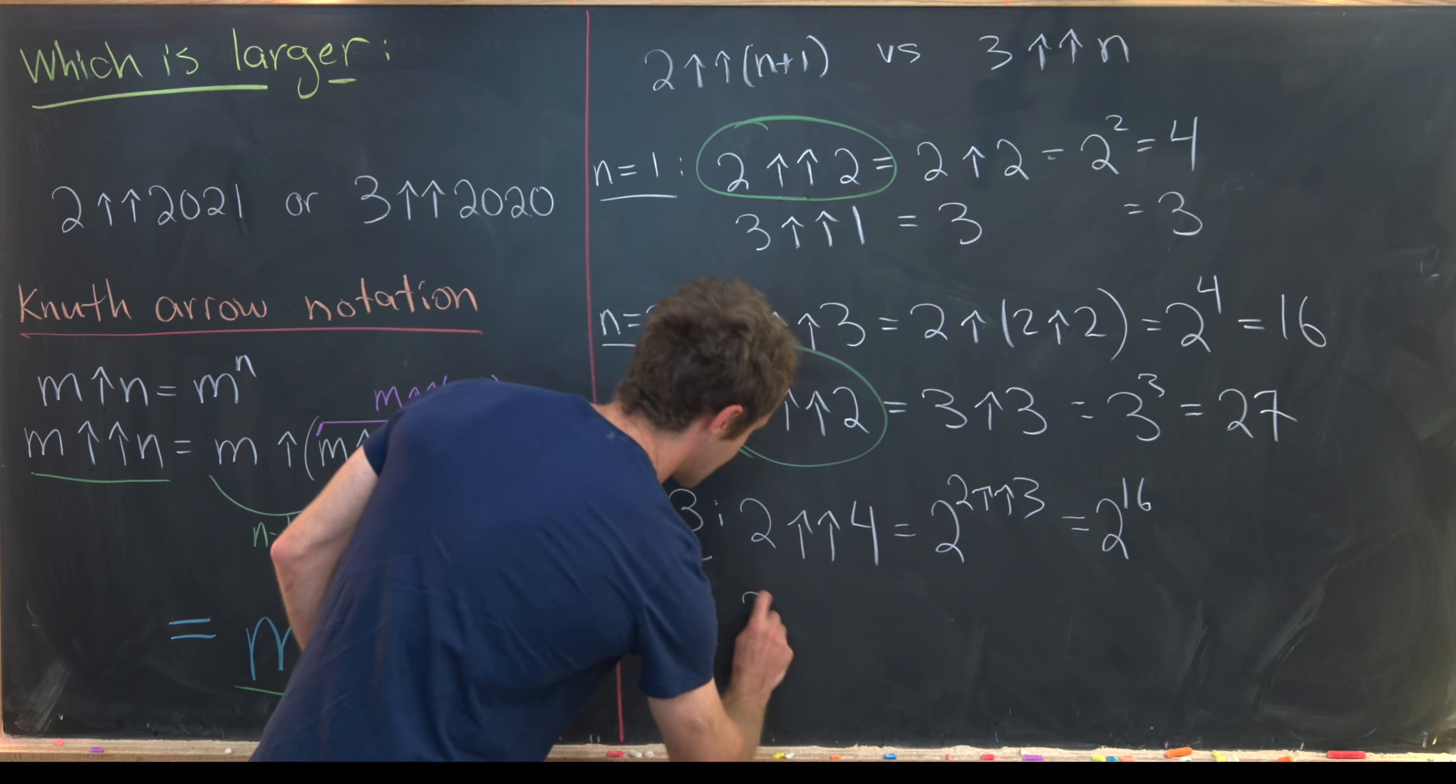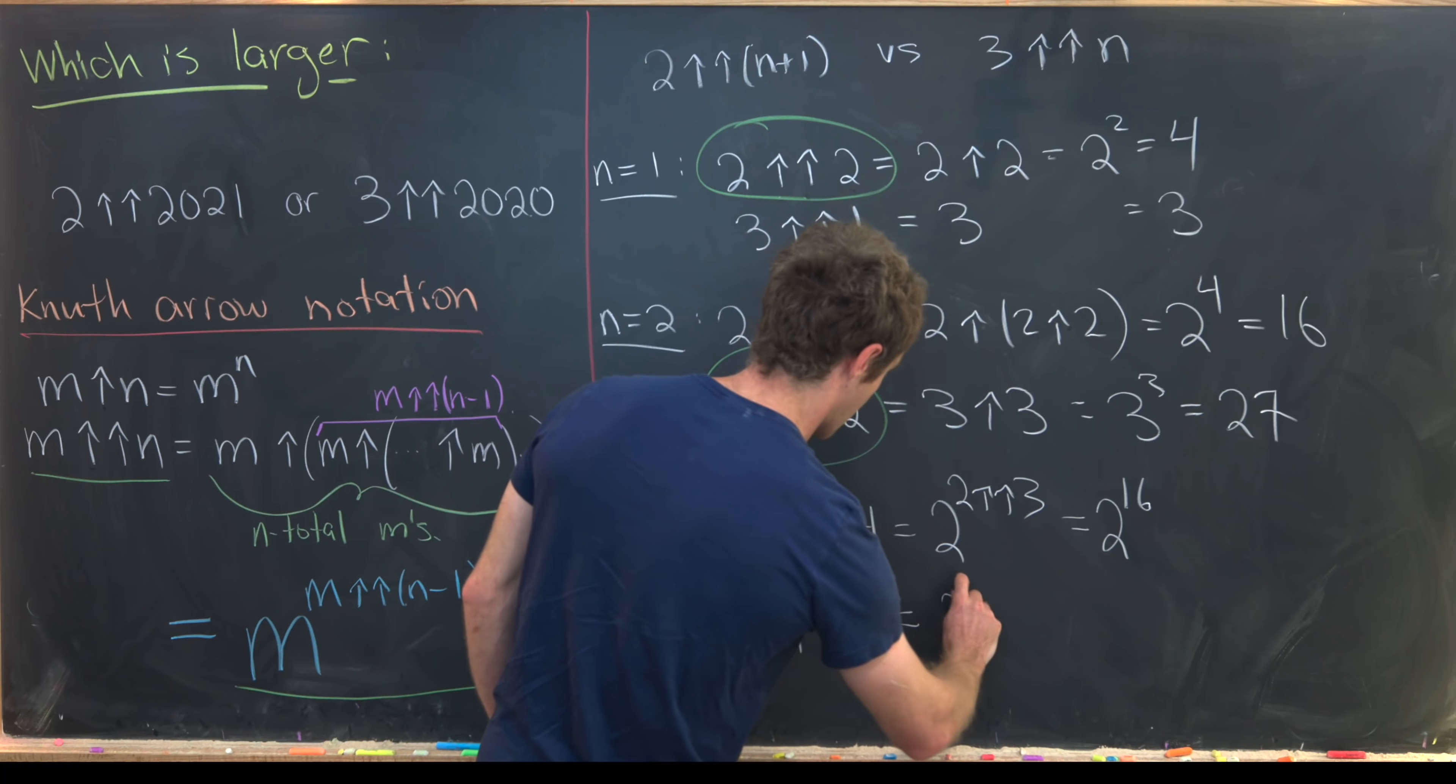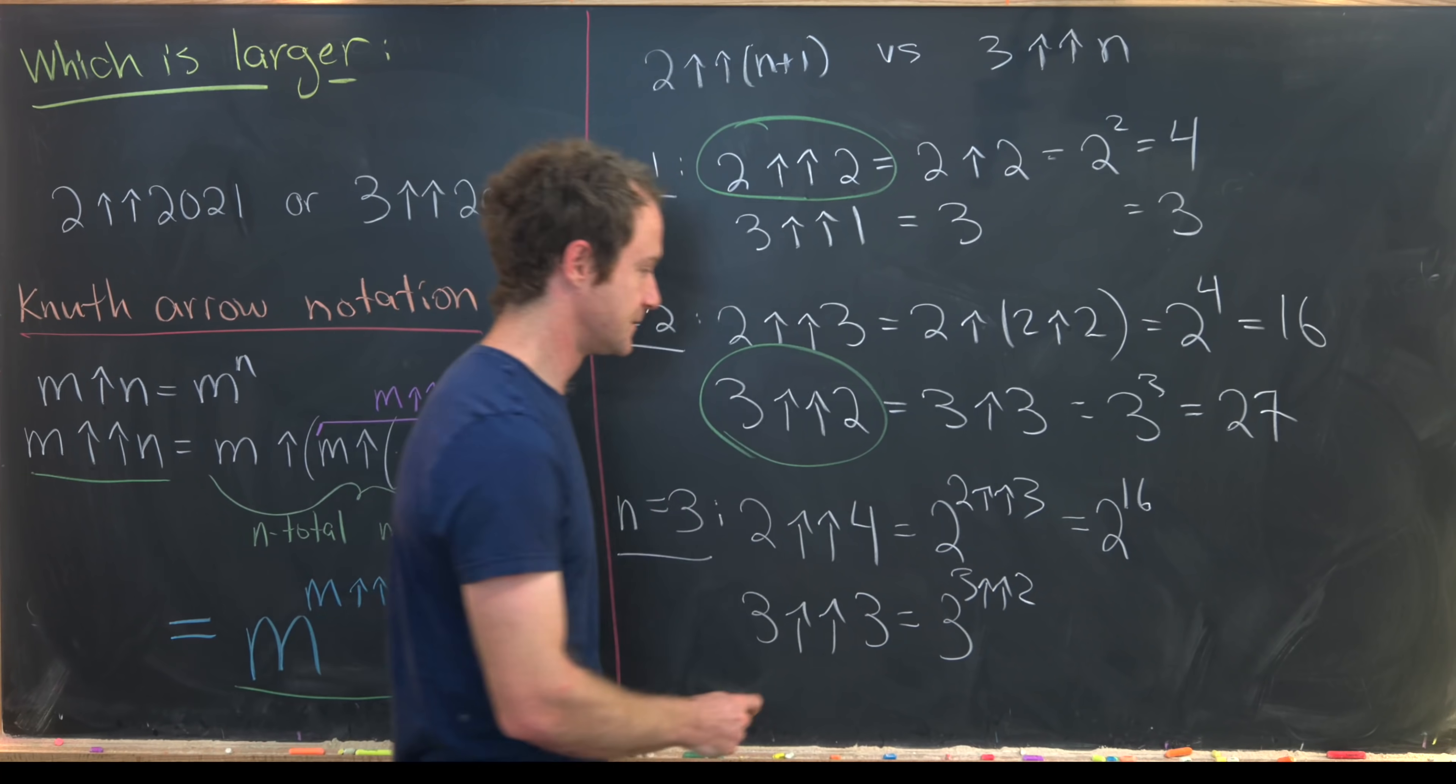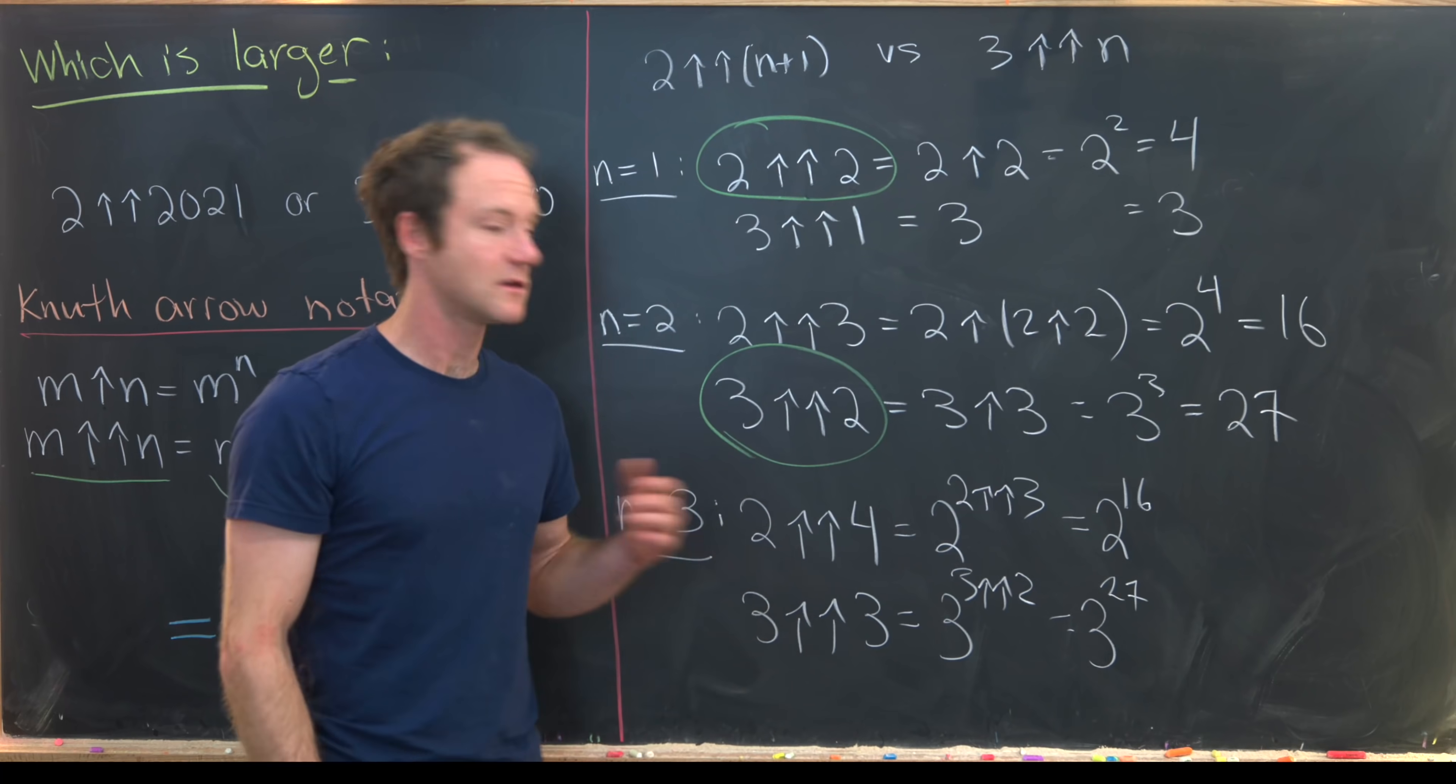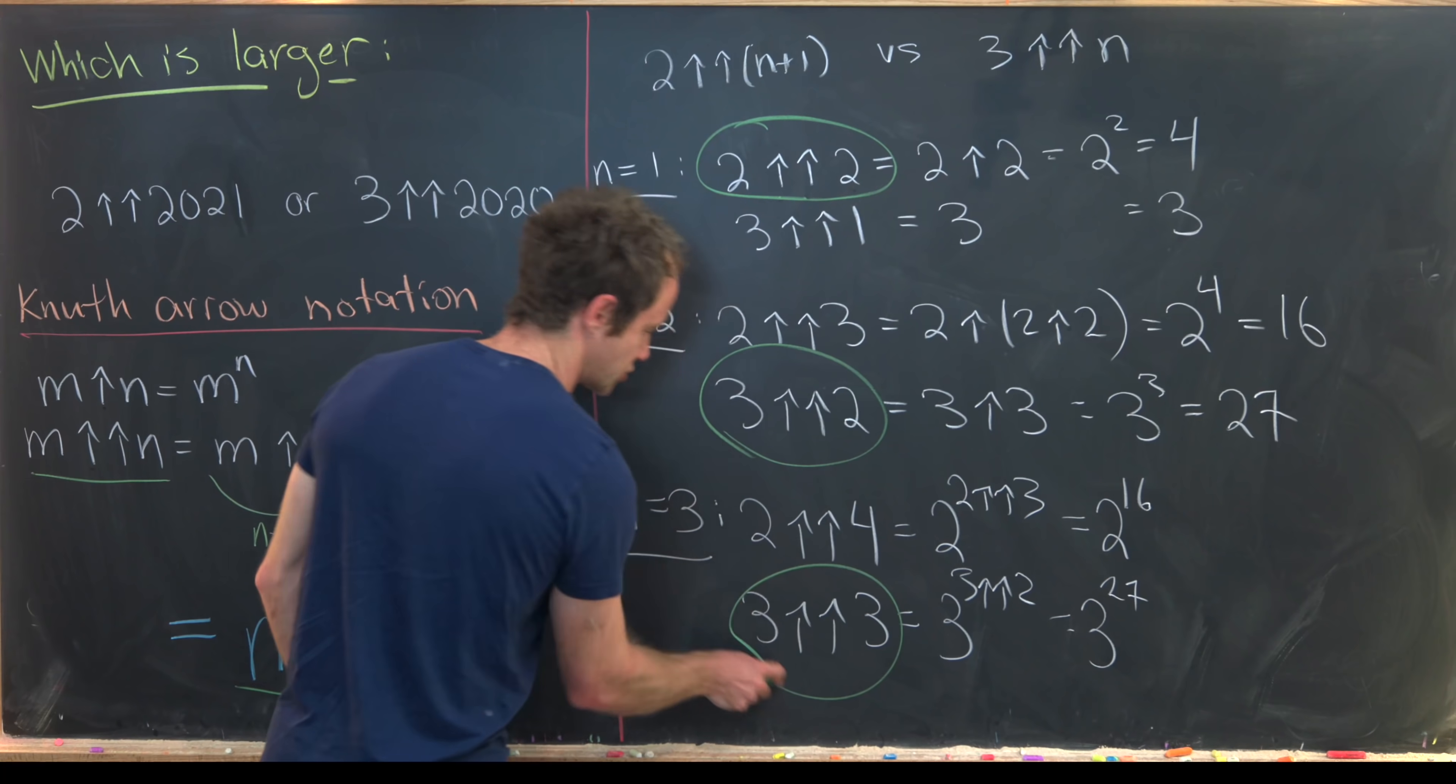But now we want to compare that to the 3 double up arrow 3 which is 3 to the power of 3 double up arrow 2 again from this observation. But that's going to be equal to 3 to the 27. But now let's notice that this 3 to the 27 is clearly larger. The base is larger and the exponent is larger.